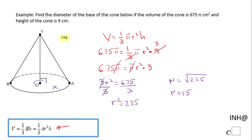How do you find the diameter? The diameter is twice the radius, so 2 times 15. So the diameter of this base which is a circle will be 30 centimeters.